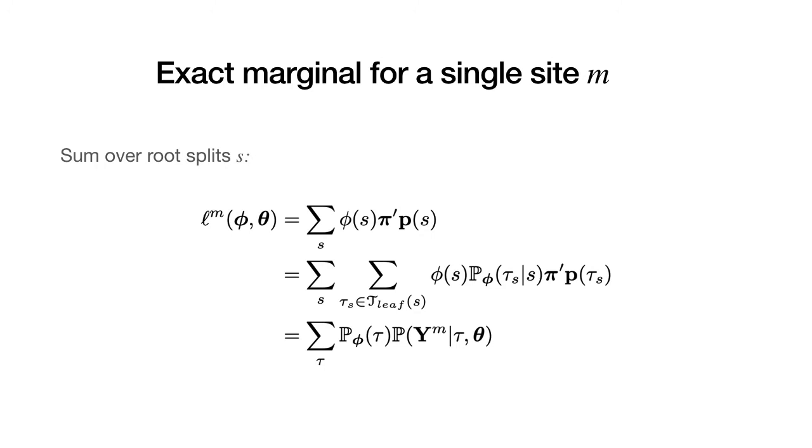So by summing over the root splits, we can compute the exact marginal likelihood for a single site m. The boldface pi here denotes the stationary distribution. And expanding on the definition of the PLV for S, we get this nice expression for probability of a subtree tau with S as the root split, multiplied by root split probability for S, and that gives us the probability of a tree tau. And we also get this vector product of stationary distribution with the likelihood of observed sequences below S, represented by a small p tau S. And this yields the likelihood of observed sequences over all taxa. And this concludes the post-order or root-ward pass of the generalized pruning algorithm.